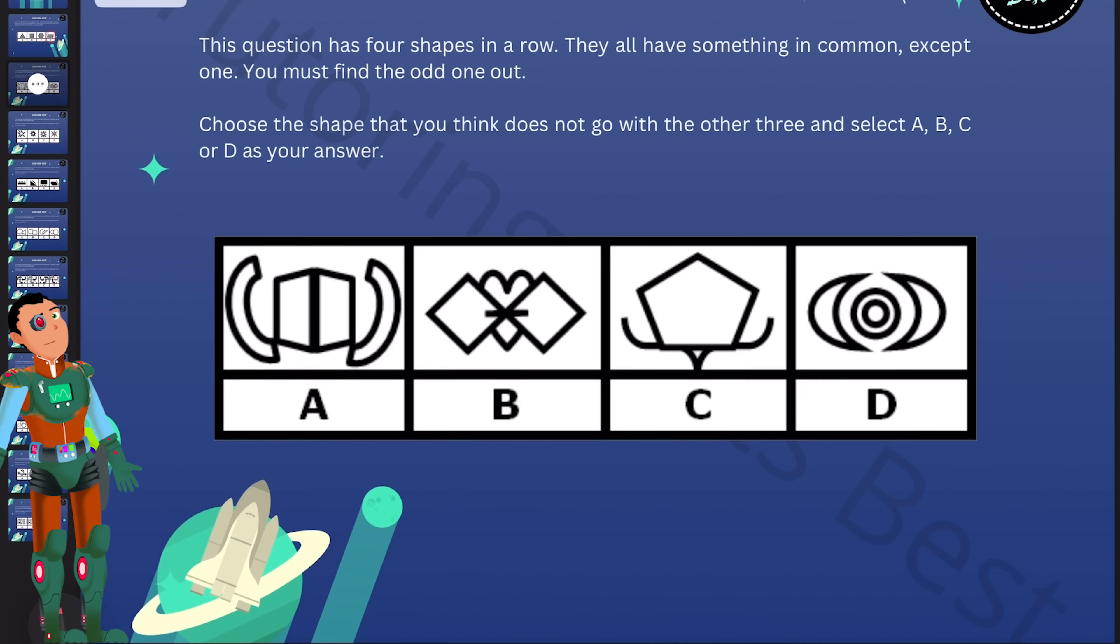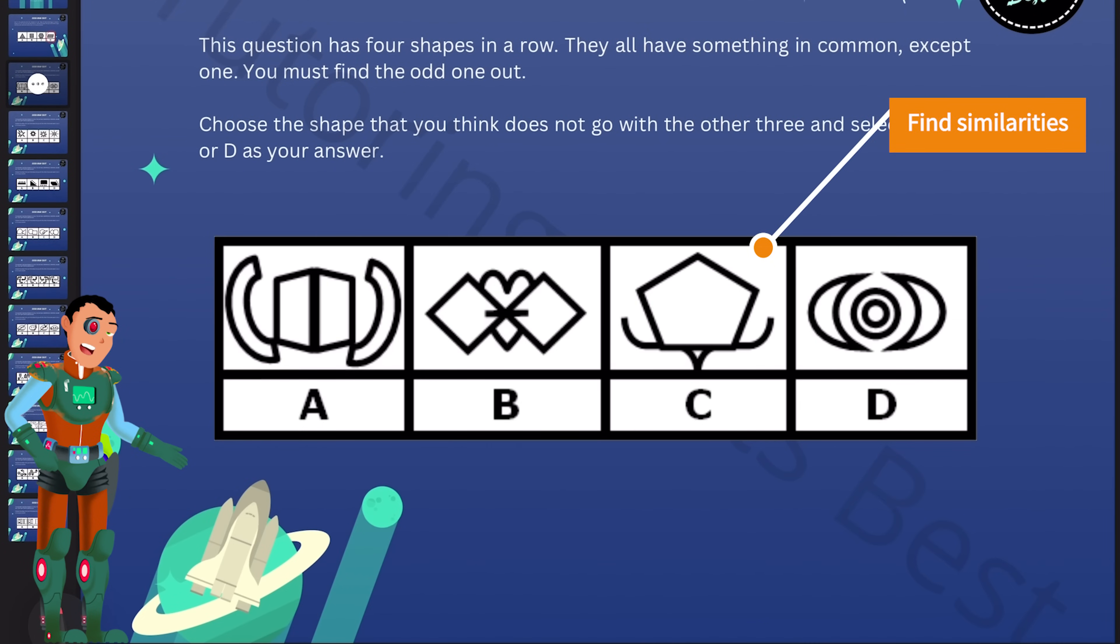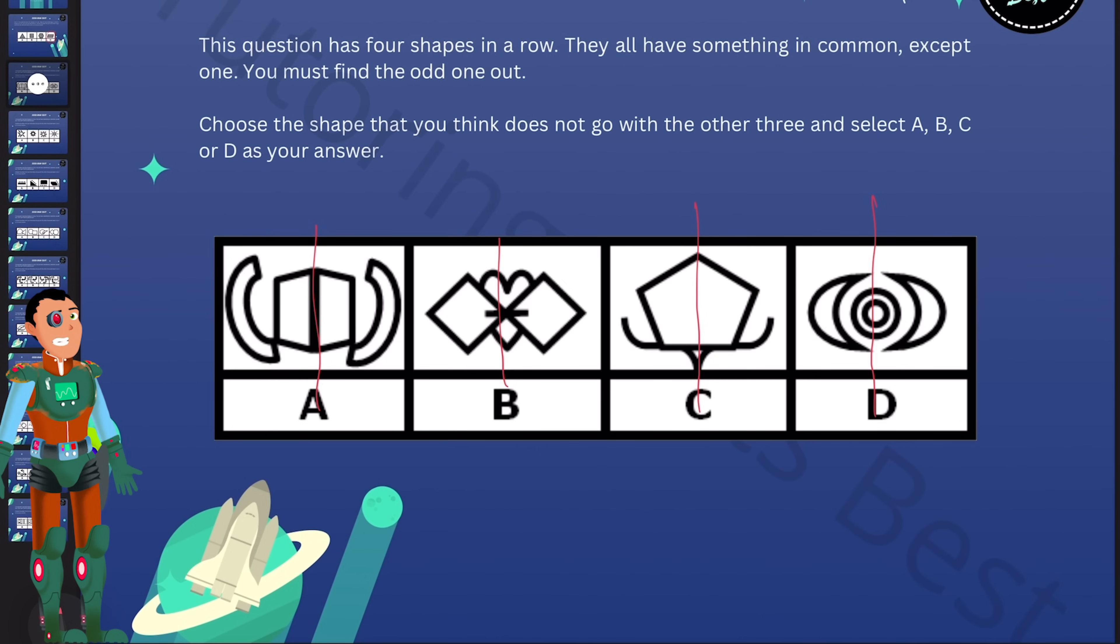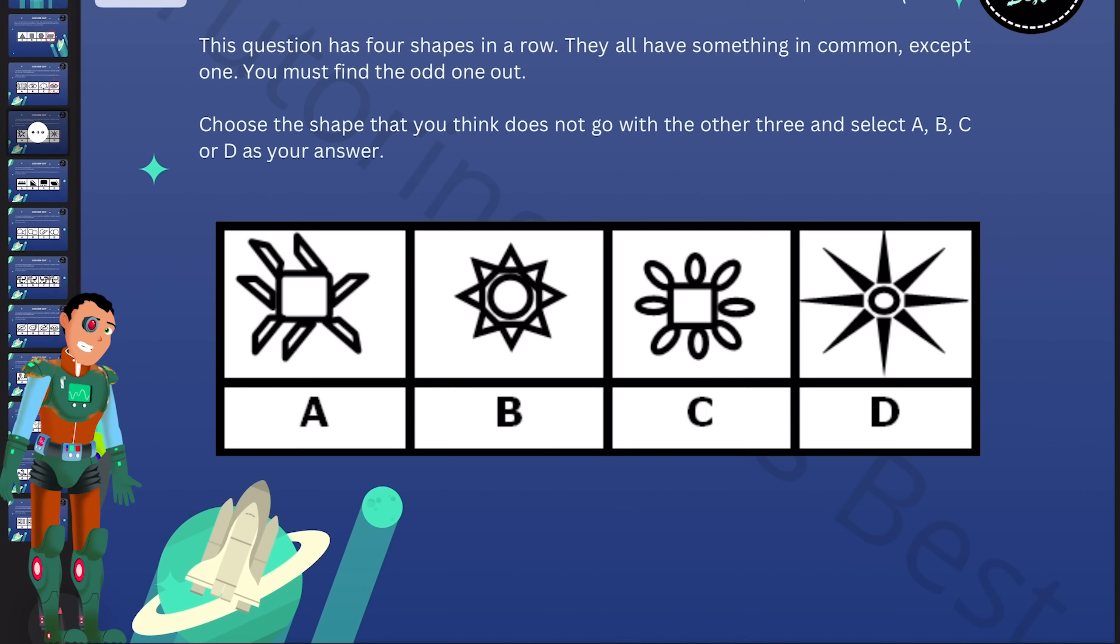Let's move over to the next question. We're going to choose a shape that we think does not go with the other three. Well, basing it on the lines of symmetry, we can see that they all almost have a vertical line of symmetry here. But it is only D that has a vertical and a horizontal line of symmetry. I hope that was clear.